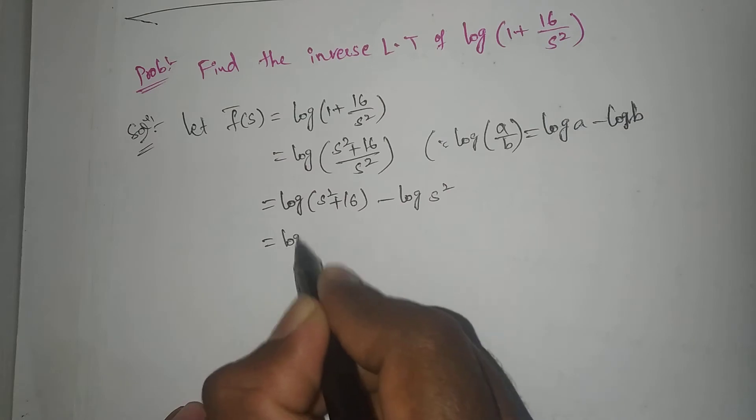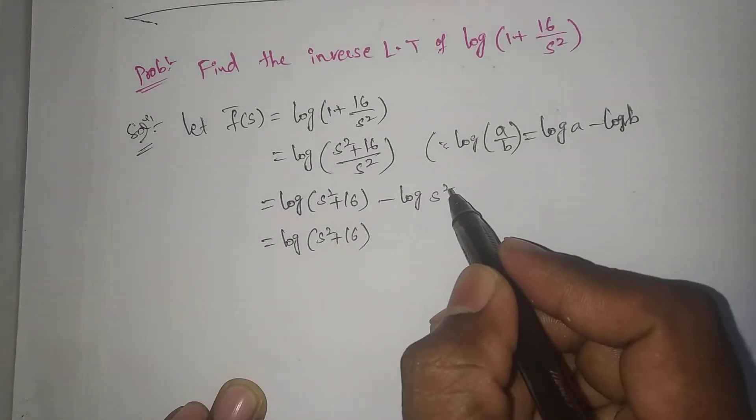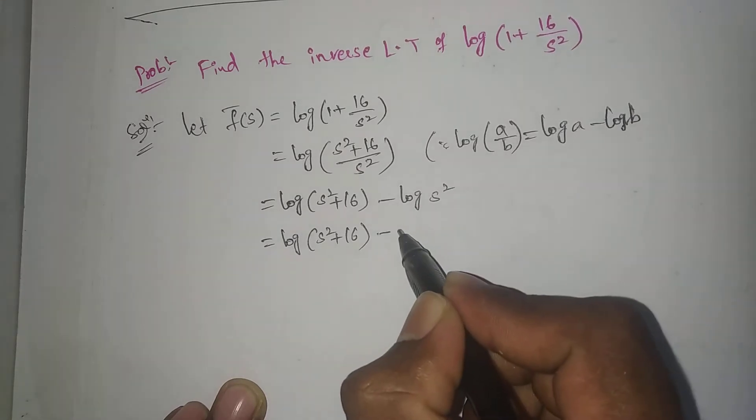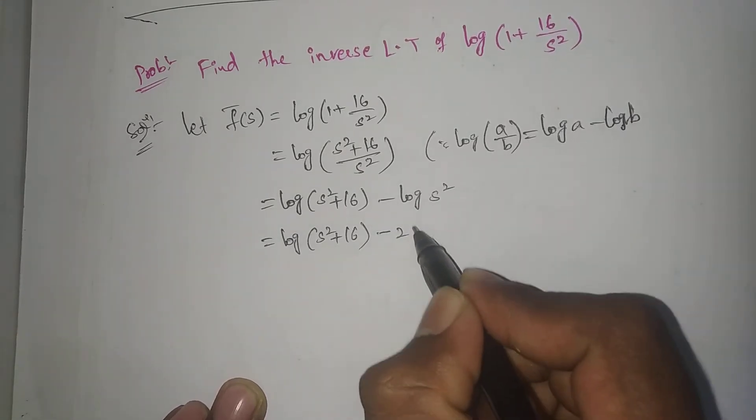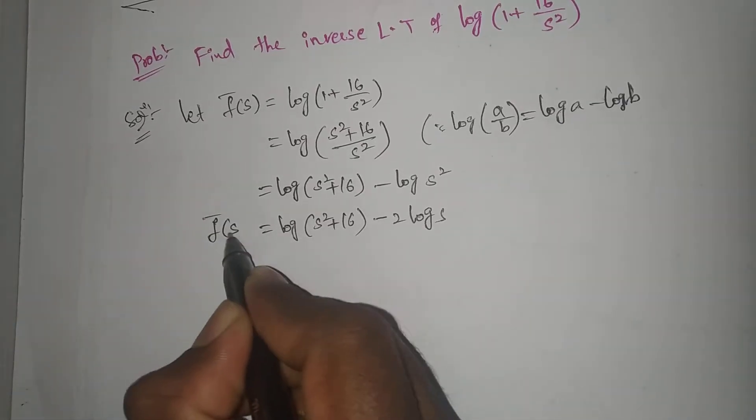This becomes log(s² + 16) - log(s²), where log(s²) = 2log(s) with 2 coming as the coefficient. This is f̄(s).